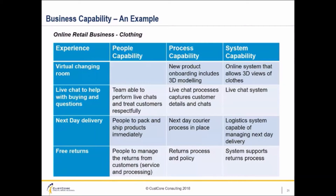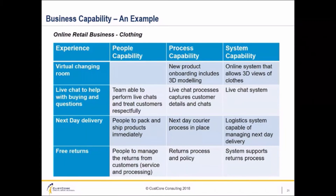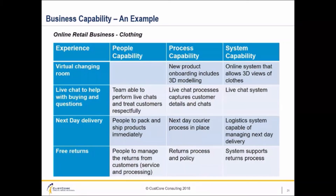Moving to delivery: for people capability, you have to have people to pack and ship products immediately — though many companies automate this. The process has to have next day courier processes in place, and there has to be a logistics system capable of managing next day delivery. This delivery example is one where I often see business capability not matching the experience companies want to give their customers. There's been a lot of talk about same-day delivery to match Amazon and eBay, but many companies aspire to it without having the people, processes, or systems in place to actually get it done.